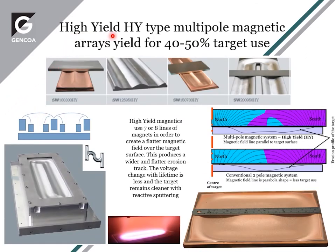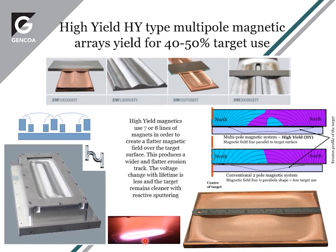The High Yield design (HY) is our biggest selling product. It's a more complicated multi-pole design with seven or eight lines of magnets depending on the target width, creating a flatter field. A simple two-pole design loops between two poles, whereas the high yield multi-pole design produces a flatter field, giving better distribution of plasma and higher target utilization.